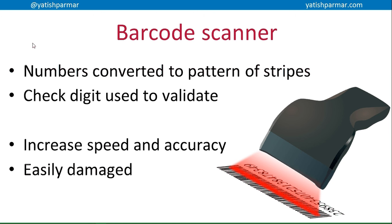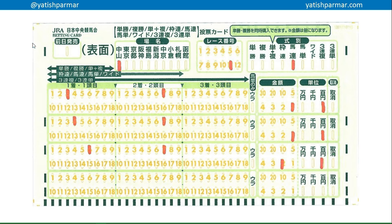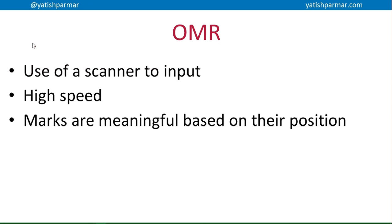In line with barcodes, I've actually forgotten to mention QR codes — that's worth looking up. Optical mark recognition uses a scanner to input characters. It's very high speed and the marks are meaningful based on their position. This is an example of a betting card from Japan, similar to lottery tickets in the UK, where marks are made on the paper and then fed into a scanner. The position of the mark gives meaning to the data that needs to be stored in the system.